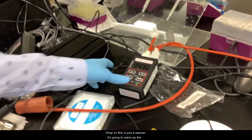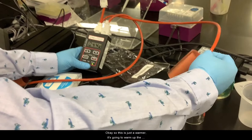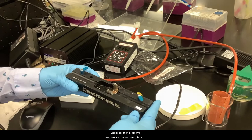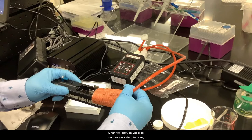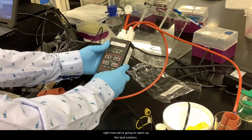This is a warmer. It's going to warm up the vesicles in this leaf, and we can also use this to warm up the lipid extruder. When we extrude vesicles, we can see that later. Right now, we're going to warm up the lipid solution.